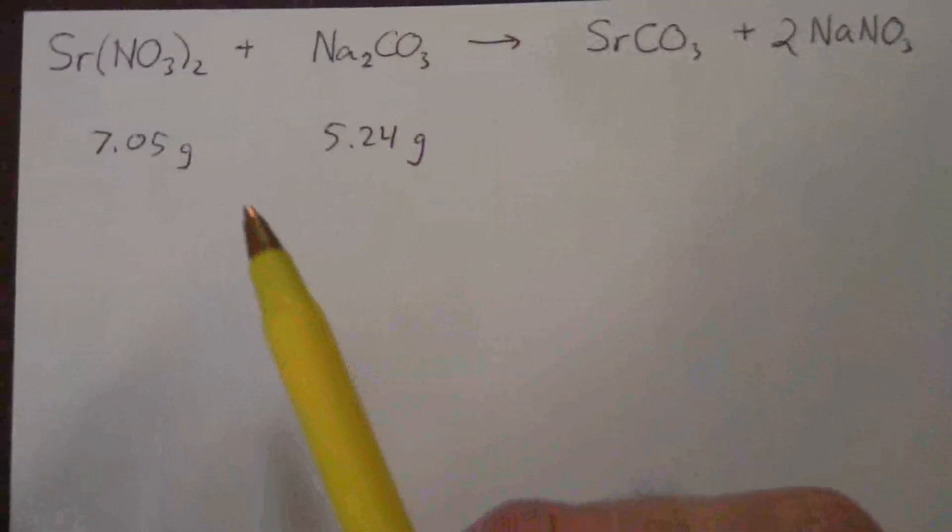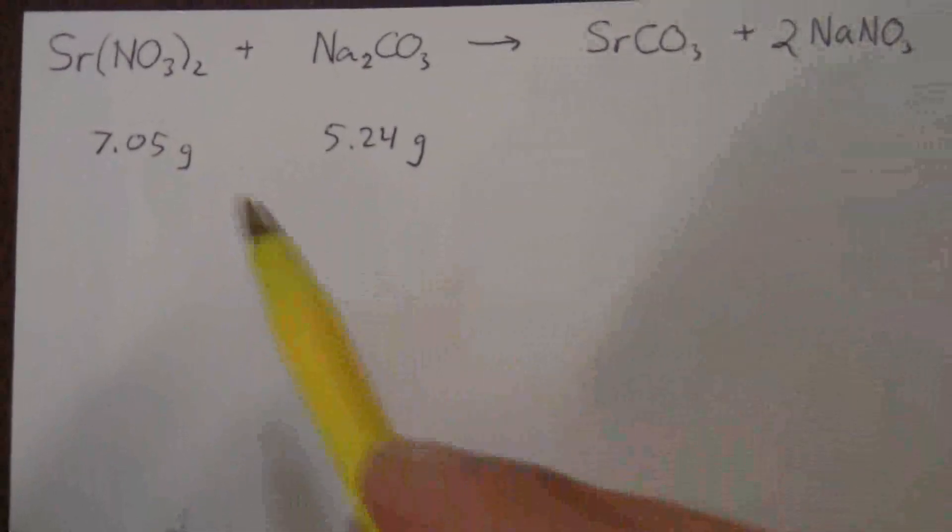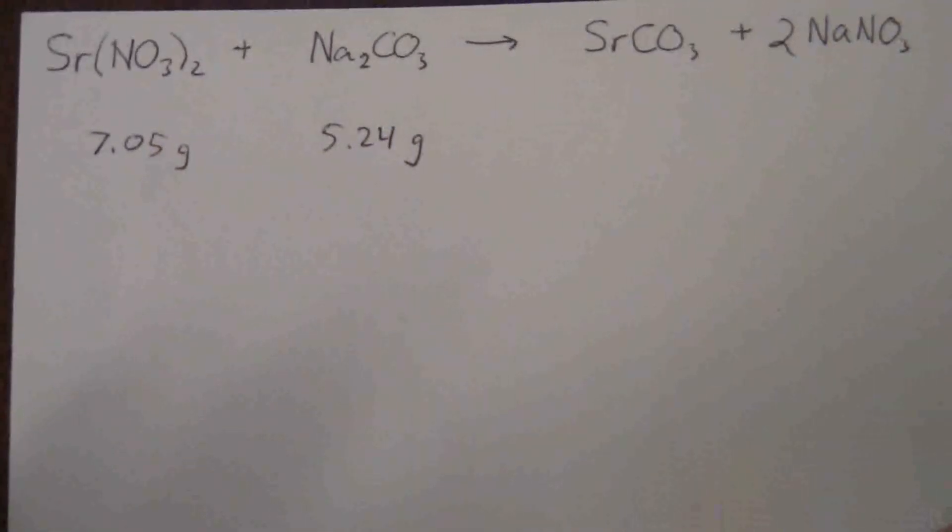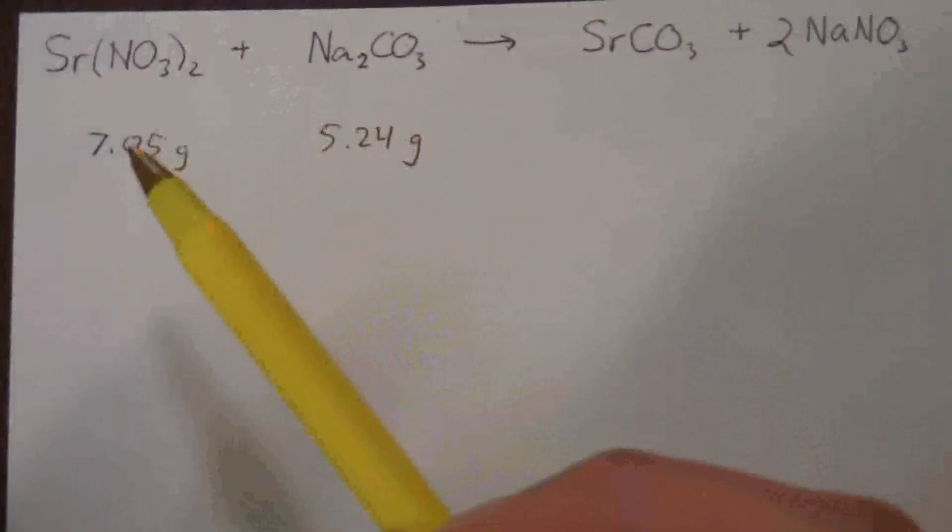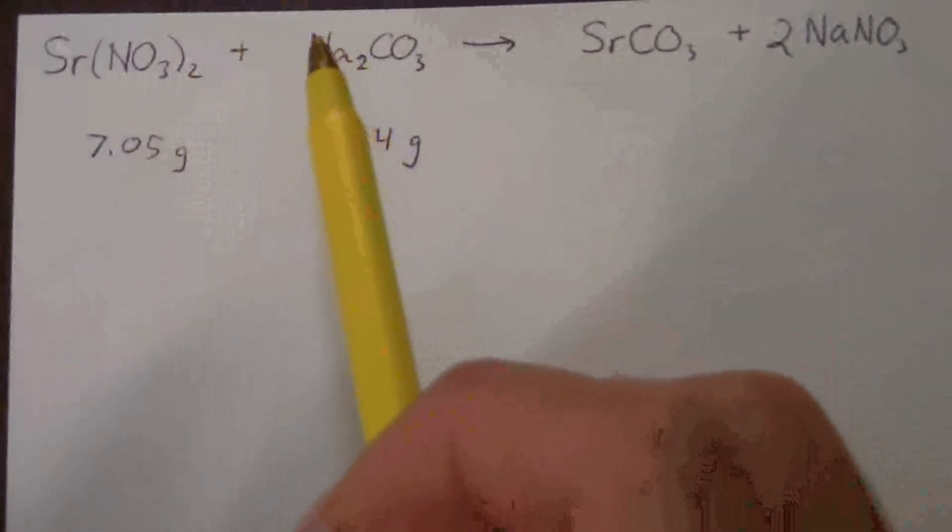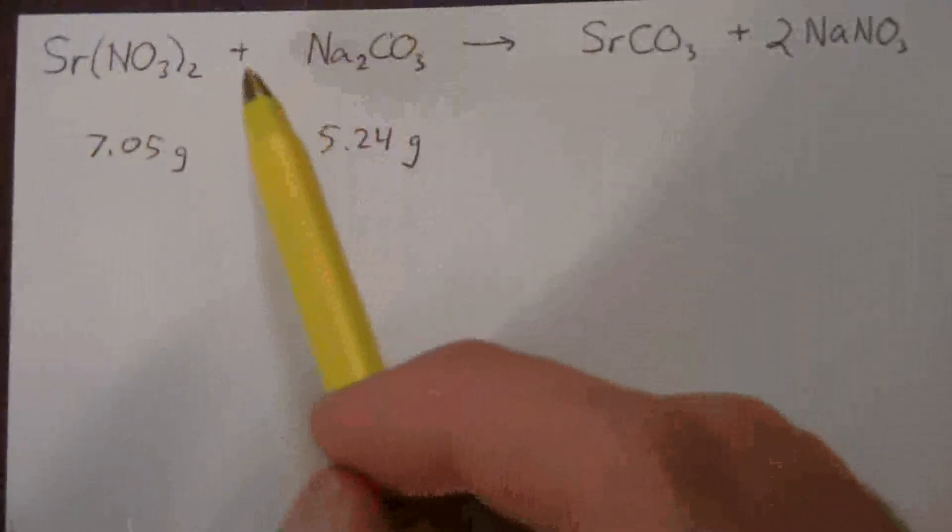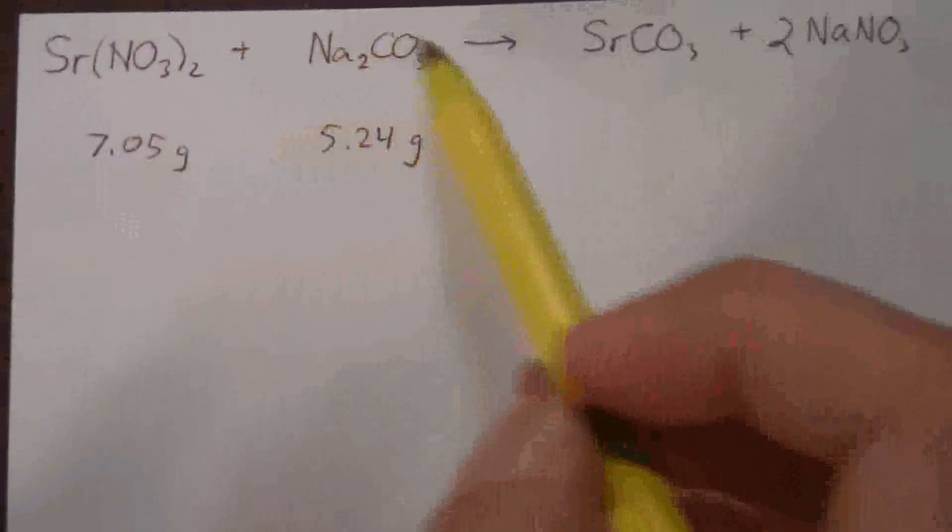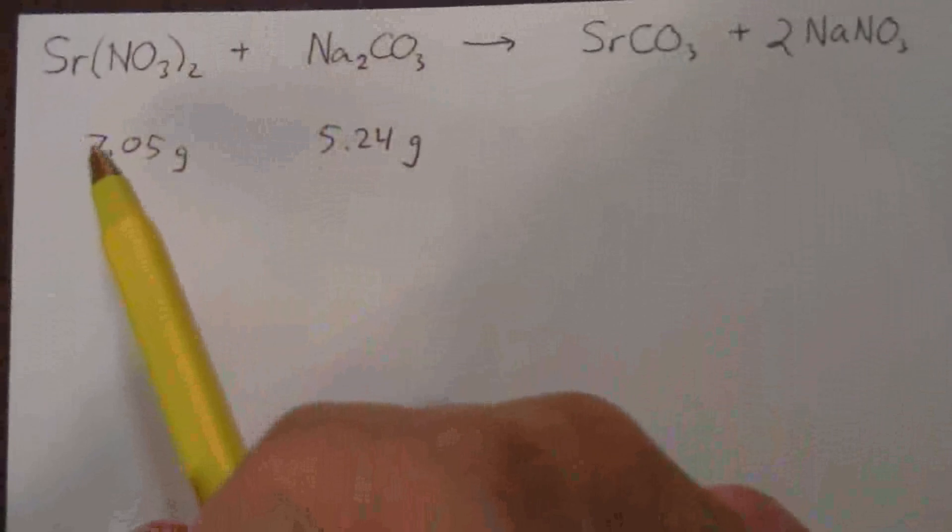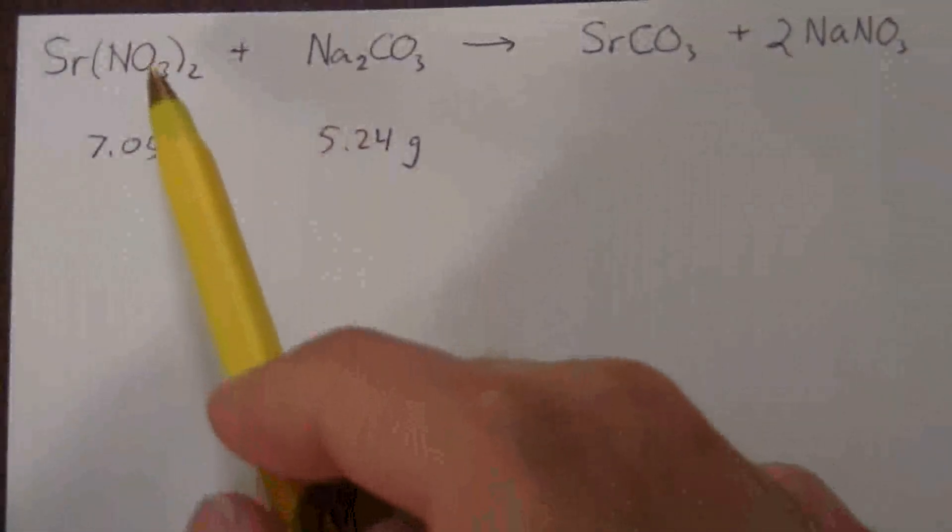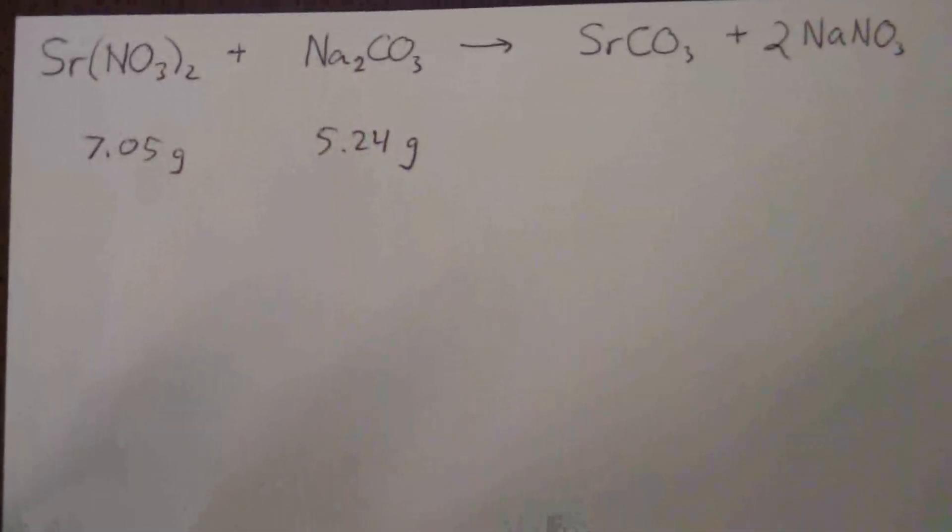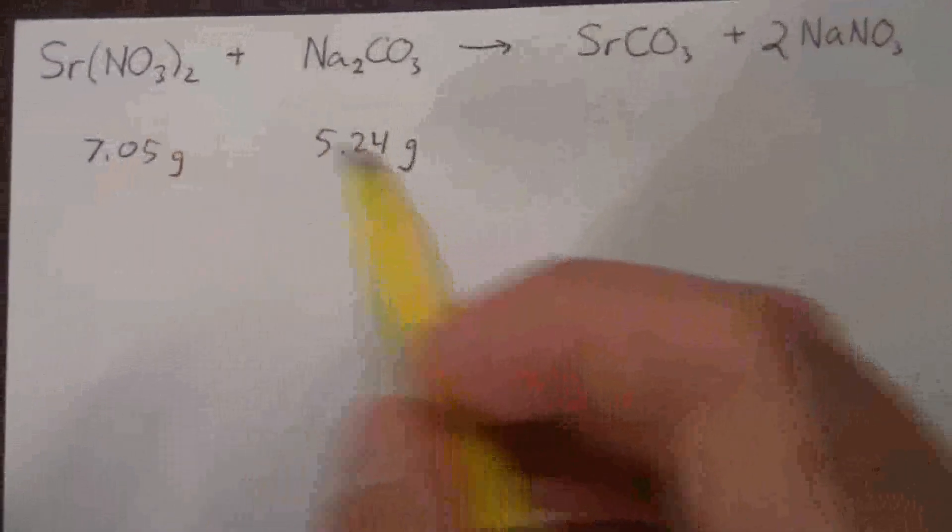So now, which one of these is going to be used up first? I can't directly, because you might look at this and say, well, I have less of this one, so obviously that one's going to be used up first. No, I have to remember that in the equation, these are, it's saying one mole of strontium nitrate will react with one mole of sodium carbonate, not one gram with one gram. So I need to first convert these to moles and then decide what my limiting reagent will be. So it's a two-step process.